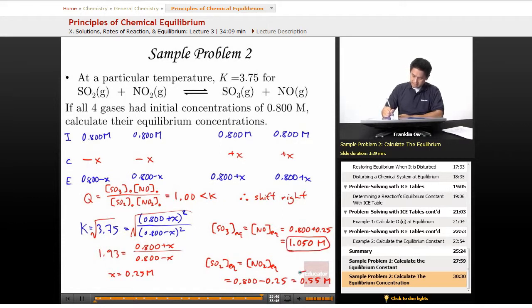So that is use of the ICE table when we have all four initial values present. Once again, you've got to find which way it's going to shift. And you do that by evaluating Q.